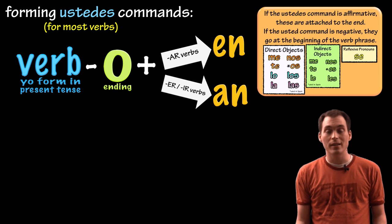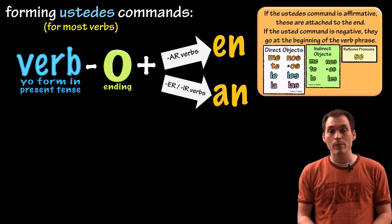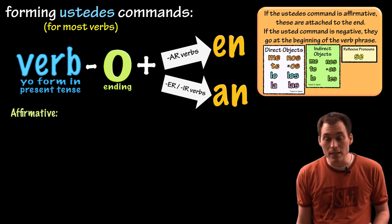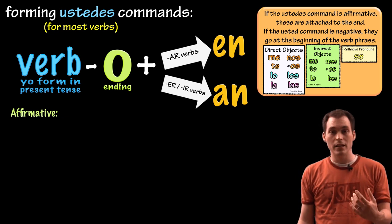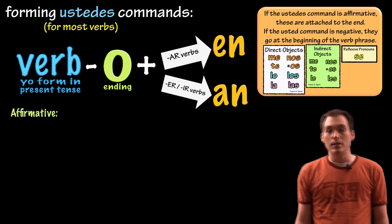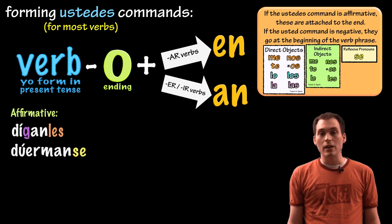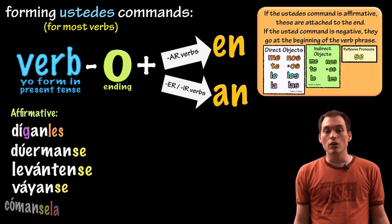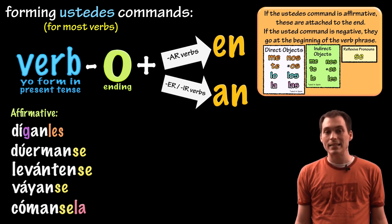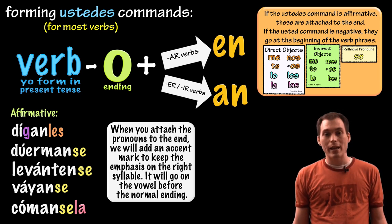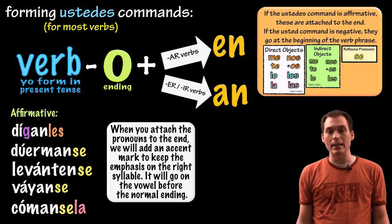When it comes to pronouns like direct or indirect or reflexive, it's the same as we did with the tú commands and the usted commands. If it's an affirmative command that is a non-negative command, then we'll just attach to the end, the indirect object, the direct object, or the reflexive. So here are some examples. Díganles, tell them, duérmanse, fall asleep, levántense, get up, váyanse, go away, and cómansela, eat it. Notice that we're going to add an accent mark to the second to last syllable before we add these on to keep and preserve that sound.